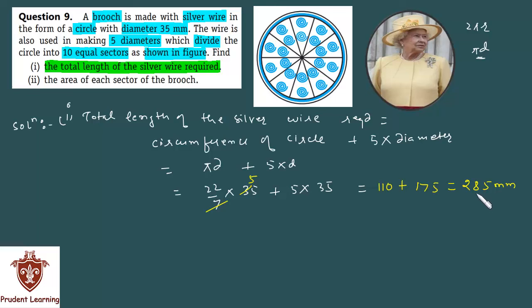This means the total length of silver wire used to make this brooch is 285 mm.